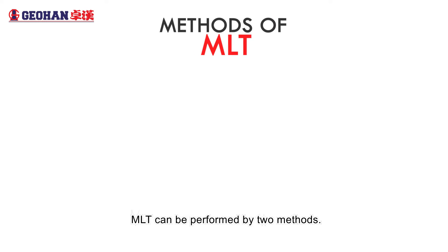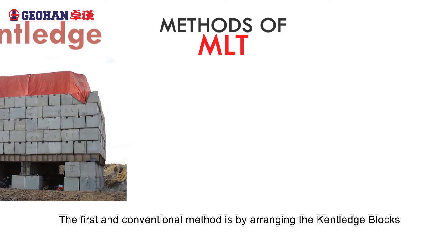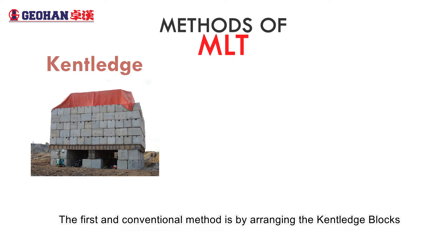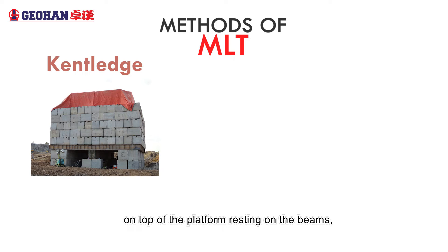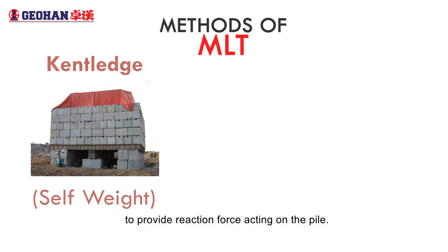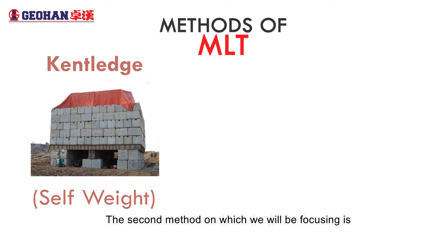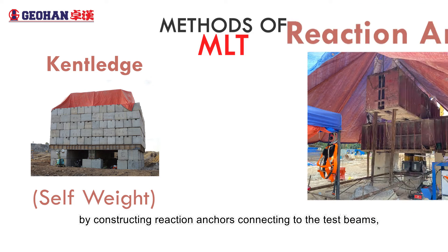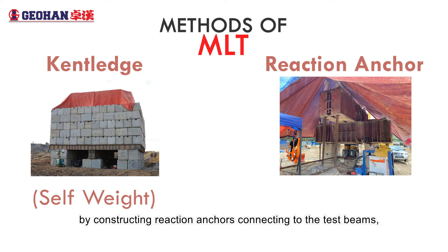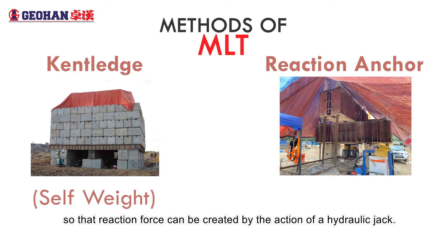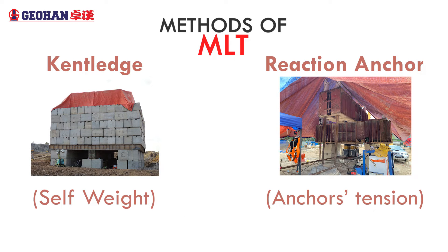MLT can be performed by two methods. The first and conventional method is by arranging the cantilever blocks on top of the platform resting on the beams to provide reaction force acting on the pile. The second method, on which we will be focusing, is by constructing reaction anchors connecting to the beams so that the reaction force can be created by the action of a hydraulic jack.